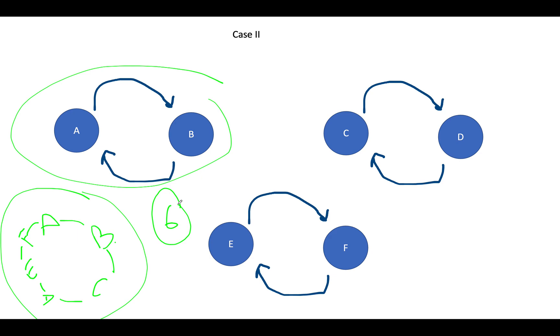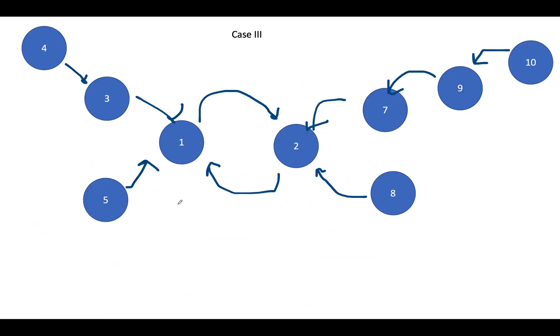Let's extend this case and merge it with case one. This is what it may look like. We have nodes as four's favorite is three, three's favorite is one, one's favorite is two, two's favorite is one. Also, seven's favorite is two, nine's favorite is two, ten's favorite is nine, eight's favorite is two, five's favorite is one. So what do we do in such a case? This is a highly complicated case. Let's try and simplify this.